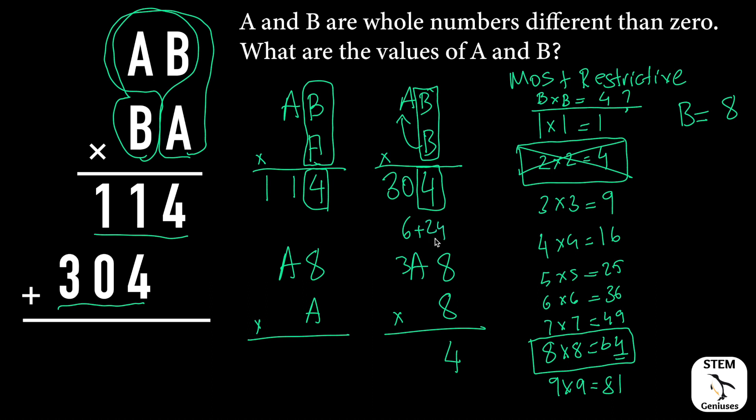So our A value is 3, and this is our solution. I hope you enjoyed this cryptogram puzzle and you like the video. Thank you for watching, I will see you in the next video. Bye!